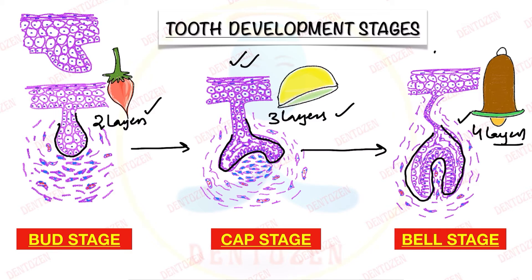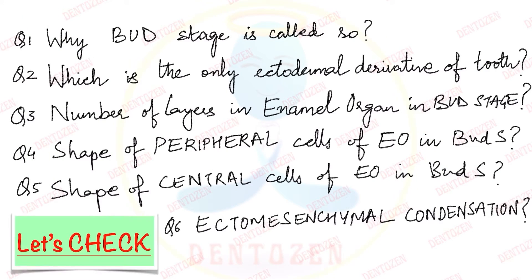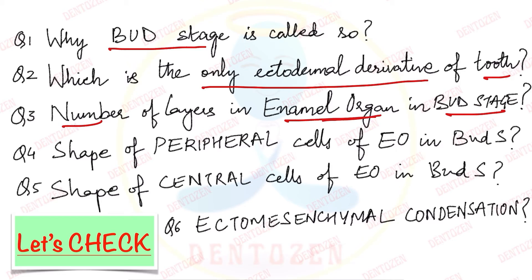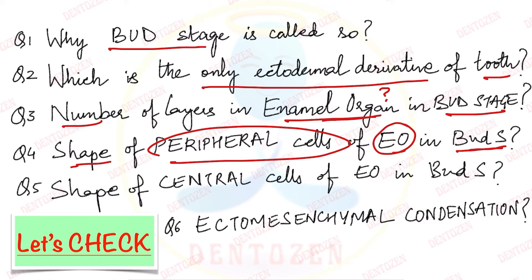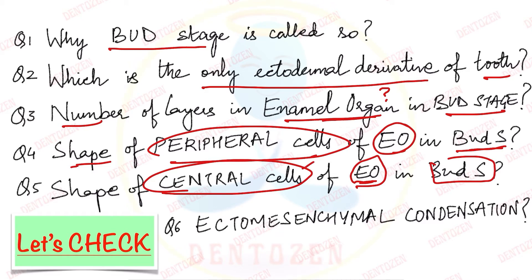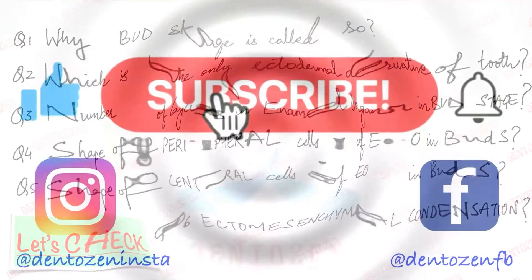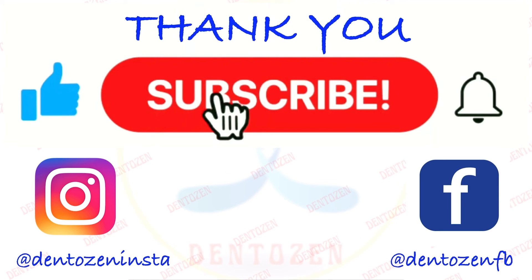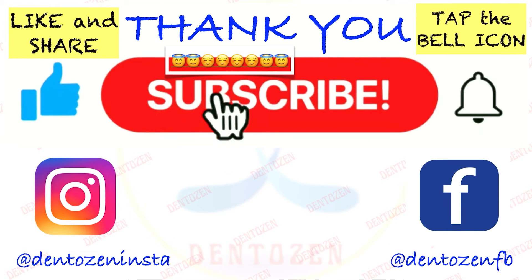In coming videos we are going to discuss the cap stage and bell stage in detail. So that is all for this video. Now let's check what you have understood: Why is bud stage called so? Which is the only ectodermal derivative of tooth? What is the number of layers in the enamel organ in bud stage? What is the shape of the peripheral cells of the enamel organ in bud stage? What is the shape of the central cells? And finally, what is ectomesenchymal condensation? If you liked the video, tap on the like button and share it with your friends. Also tap on the bell icon to stay notified about new videos. Good luck for your exams. See you in the next video. Take care. Bye-bye!